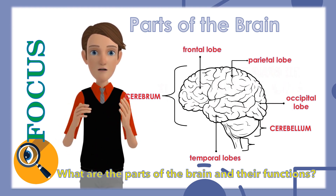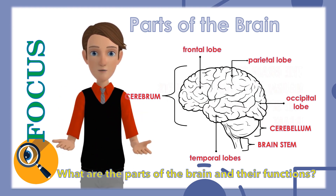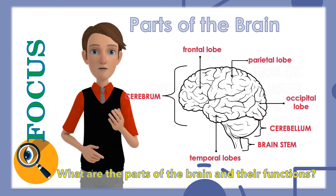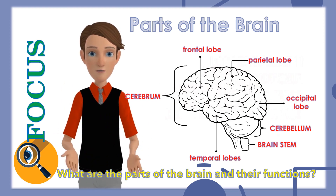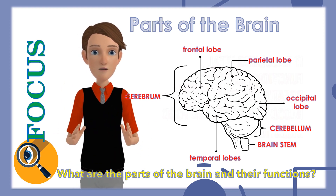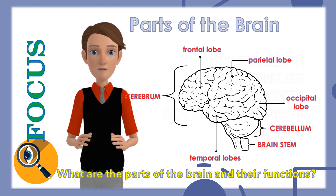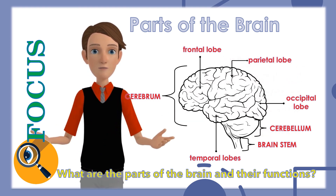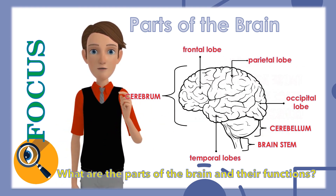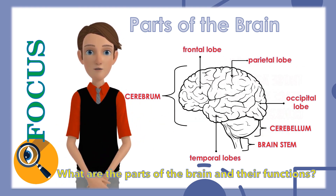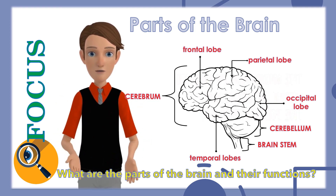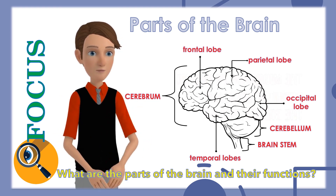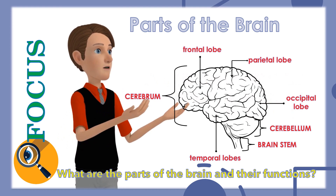The brain stem is a neural tube that connects the spinal cord to the brain. It regulates vital functions such as breathing, heart rate, blood pressure, and food digestion. Those activities take place without any conscious thought. The midbrain, pons, and medulla are all part of the brain stem.